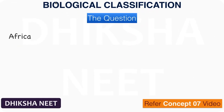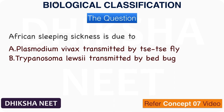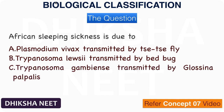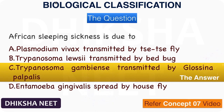The question: African sleeping sickness is due to — A. Plasmodium vivax, transmitted by Tsetse fly. B. Trypanosoma lewisi, transmitted by bed bug. C. Trypanosoma gambiens, transmitted by Glossina palpalis. D. Entamoeba gingivalis, spread by housefly. The answer is option C. Trypanosoma gambiens, transmitted by Glossina palpalis.